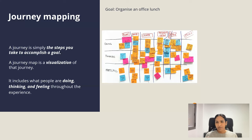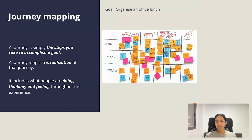In the second and third rows, in addition to the actions people are taking, the journey map also captures what people are thinking and feeling at each of those steps. What are the questions or concerns they might have throughout the journey? Are they ever frustrated, excited, hopeful, happy, overwhelmed? All of those kinds of things. And all of this is really important when trying to understand where there might be difficulties and where the experience can be improved.